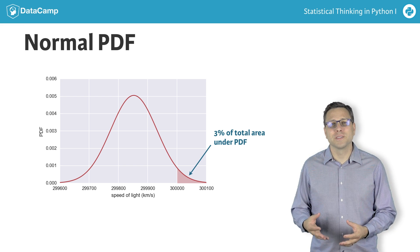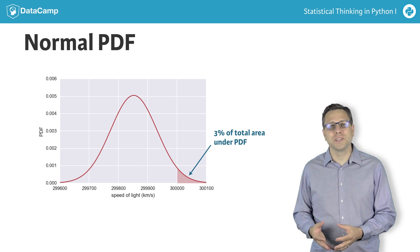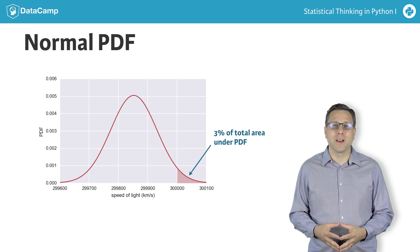Parametrizing the PDF based on Michelson's experiments, this is about a 3% chance, since the pink region is about 3% of the total area under the PDF.